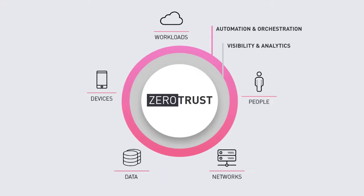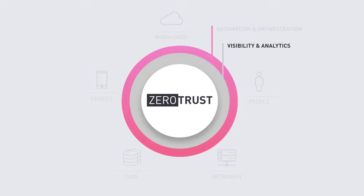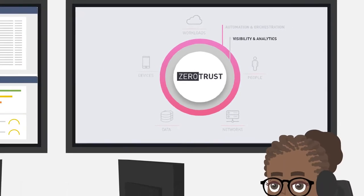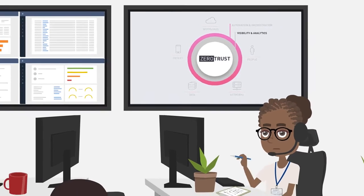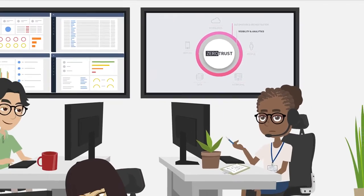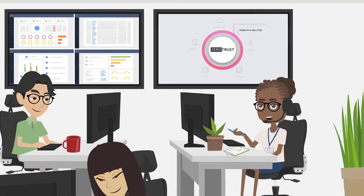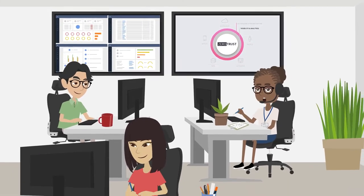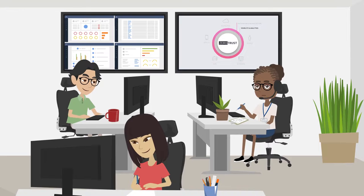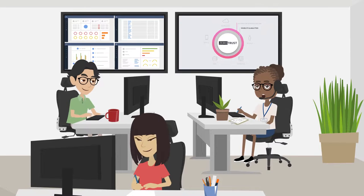Two more principles that cross all platforms are Visibility and Analytics. You can't protect what you can't see or understand. A Zero Trust security model continually monitors, logs, correlates, and analyzes every activity across your network.